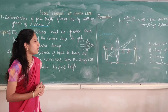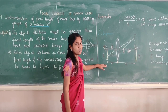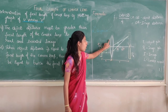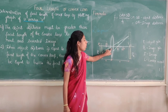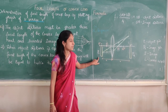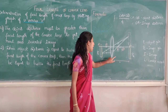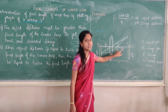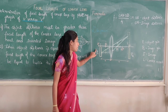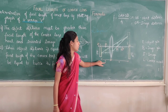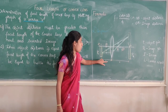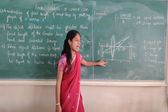Let us look into the ray diagram. As you can see, this is the convex lens we are using. Here OA represents the optic centre, and we have P1 that is the object pin and P2 that is the image pin, along with focal length F. The distance from the centre of the lens to the object pin is known as object distance, represented as U.